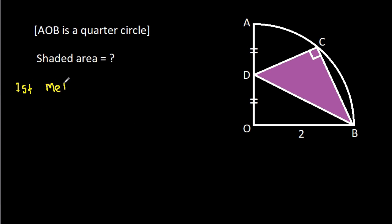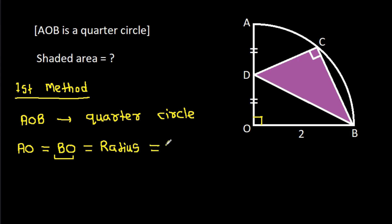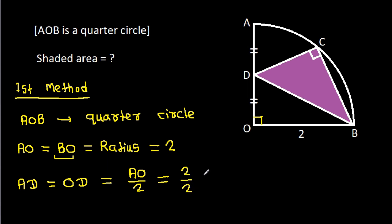The first method: we know that AOB is a quarter circle, which means the angle at O is 90 degrees, and also AO equals BO, which is the radius. Since BO is 2, and AD equals OD, OD is AO over 2, which is 2 over 2, equals 1. So AD equals 1 and OD equals 1.